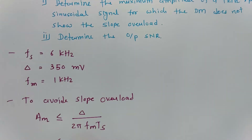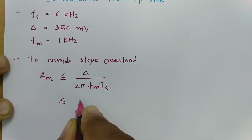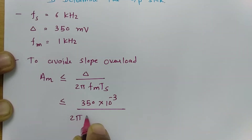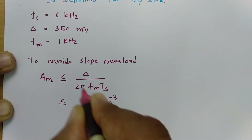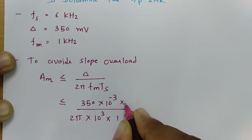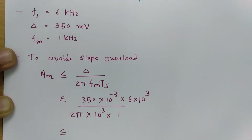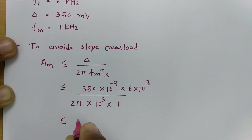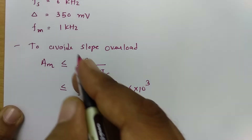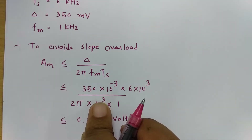Placing all the given data: delta is 350 millivolt, that is 350 × 10⁻³, divided by 2π, fm is 1 kilohertz (10³), and Ts is 1/fs which is 1 divided by 6 × 10³. Calculating this value gives 0.3357 volts. So to avoid slope overload, Am should be lower than 0.3357 volts.